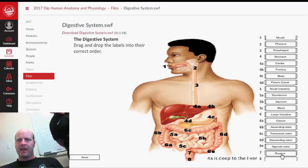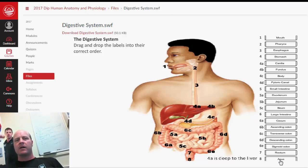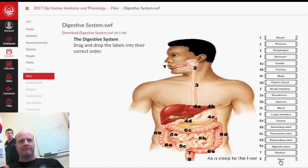And then across the transverse colon. Then down the descending colon. Then into the sigmoid colon. Because it makes it kind of like an S.